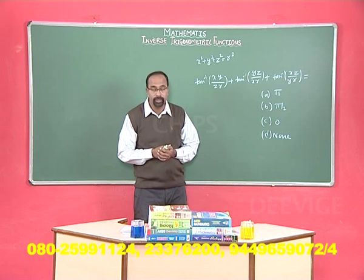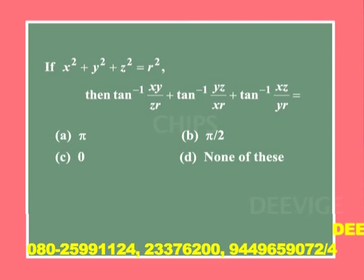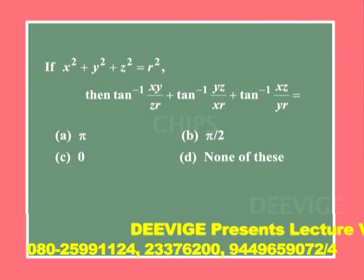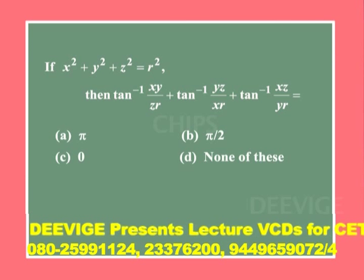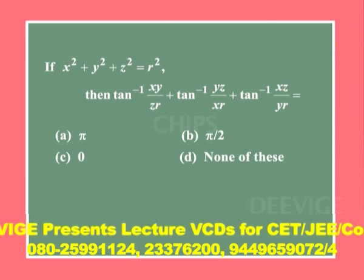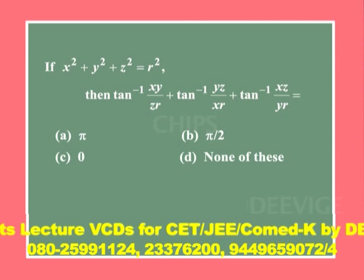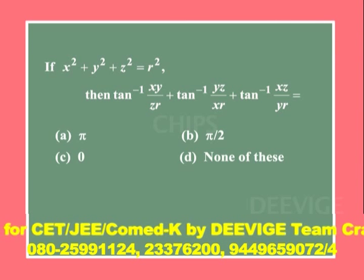Let us take up a problem of the 'prove that' derivation type. Given x² + y² + z² = r², find tan⁻¹(xy/zr) + tan⁻¹(yz/xr) + tan⁻¹(xz/yr). Option A: π; Option B: π/2; Option C: 0; Option D: none of these.